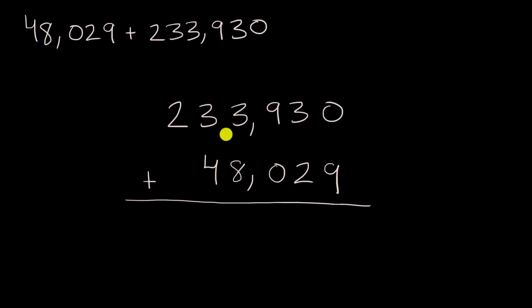So let's start in the ones place. And if I'm adding numbers, it's always a good idea to start in the ones place. Zero ones plus nine ones is nine ones. And then I can go into the tens place. Three tens plus two tens is five tens. This is going well.